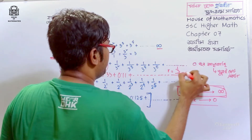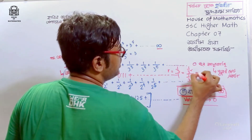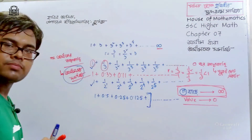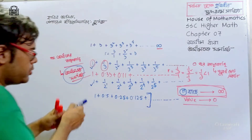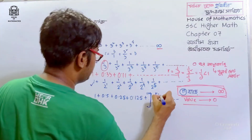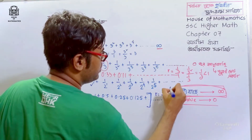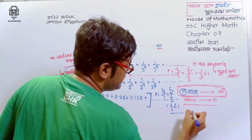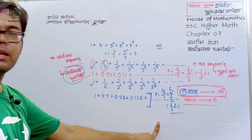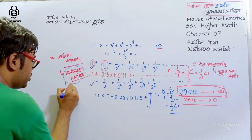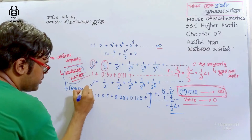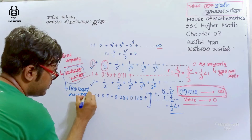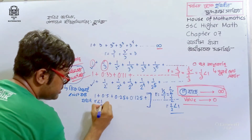1 divided by 1 is equal to 1; 1 by 2 divided by 1 by 2 is equal to half. That is also less than 1. That means, if we have the condition for the series to exist, r must be less than 1.